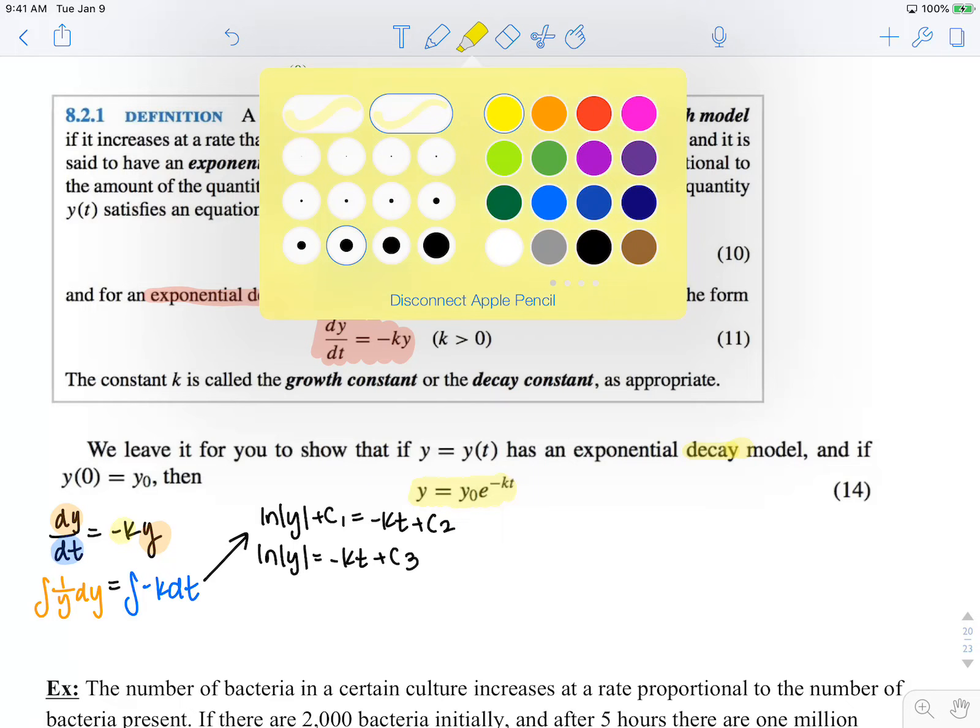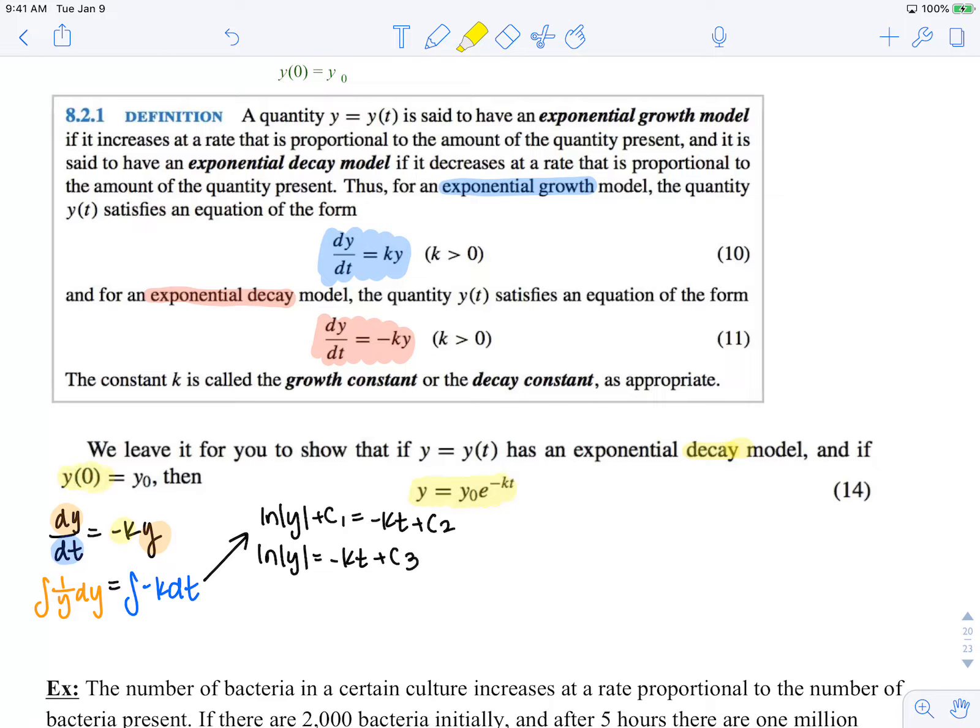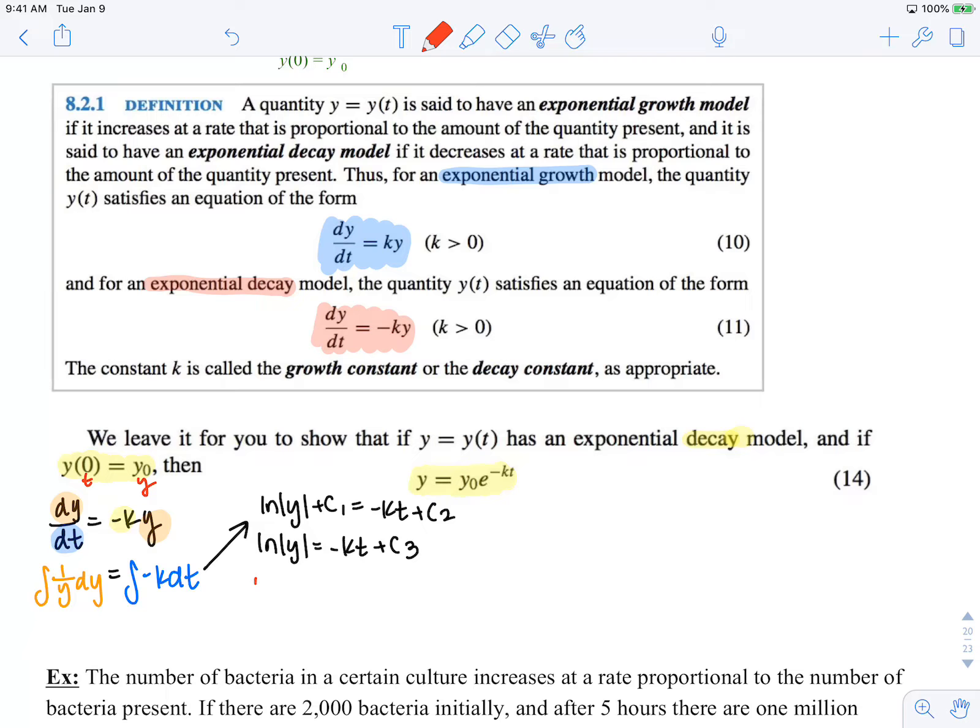Now we could use this initial condition here to solve for c. This is telling us when t is 0, y is y0. So ln absolute value of y0 is negative k times 0 plus c3. So we know c3 is ln of absolute value of y0.